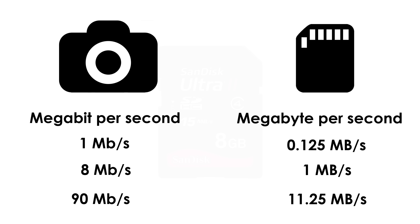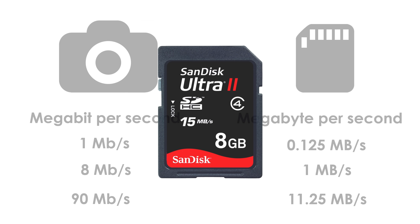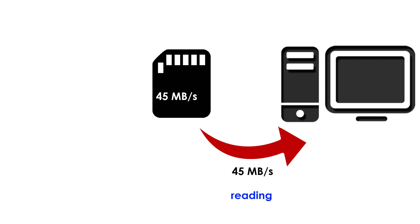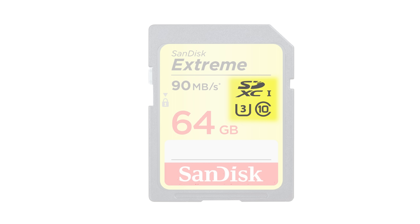Would that mean you can simply go with a 15 megabyte per second card? No — because the number on the SD card is only the reading speed, not the writing speed. That means it's the speed the card has when you copy files from your SD card onto your computer, but not the speed it has when you record videos onto it. The writing speed is shown by those symbols on the card.